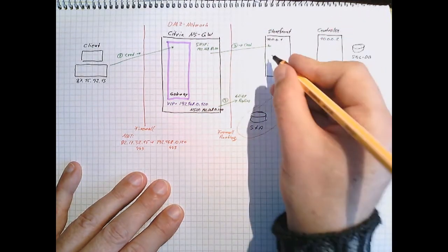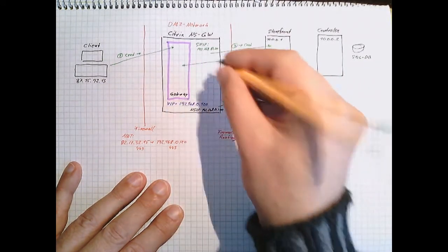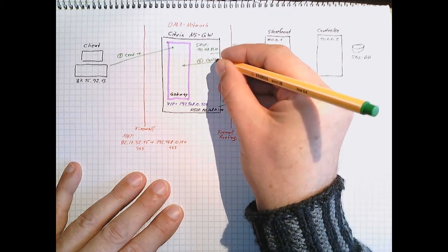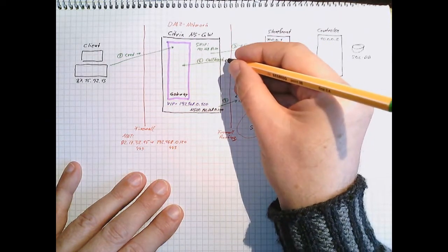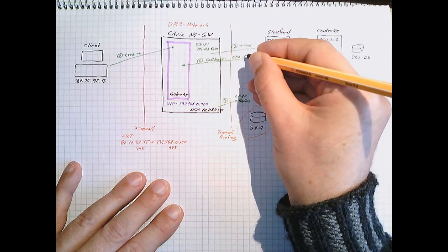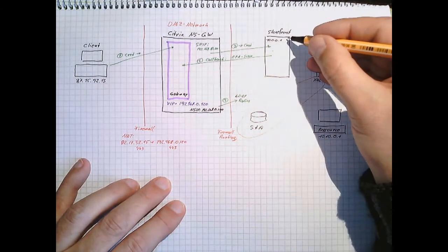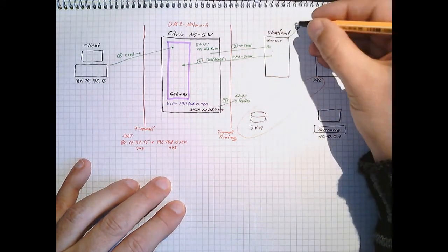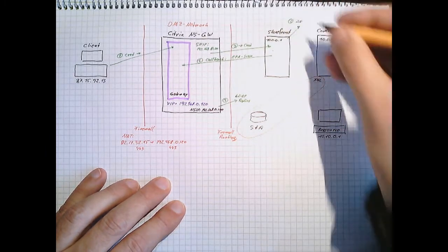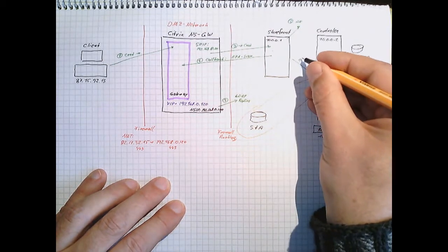Next is an optional one. Storefront will do a callback to NetScaler gateway. The callback is done on port 443 and it's used to get all the endpoint analysis scan results from NetScaler gateway. There are some more reasons for this but I won't go into this. Now the user will be authenticated to the Active Directory again. This is number five. After successful authentication we will pass the credentials to controller.